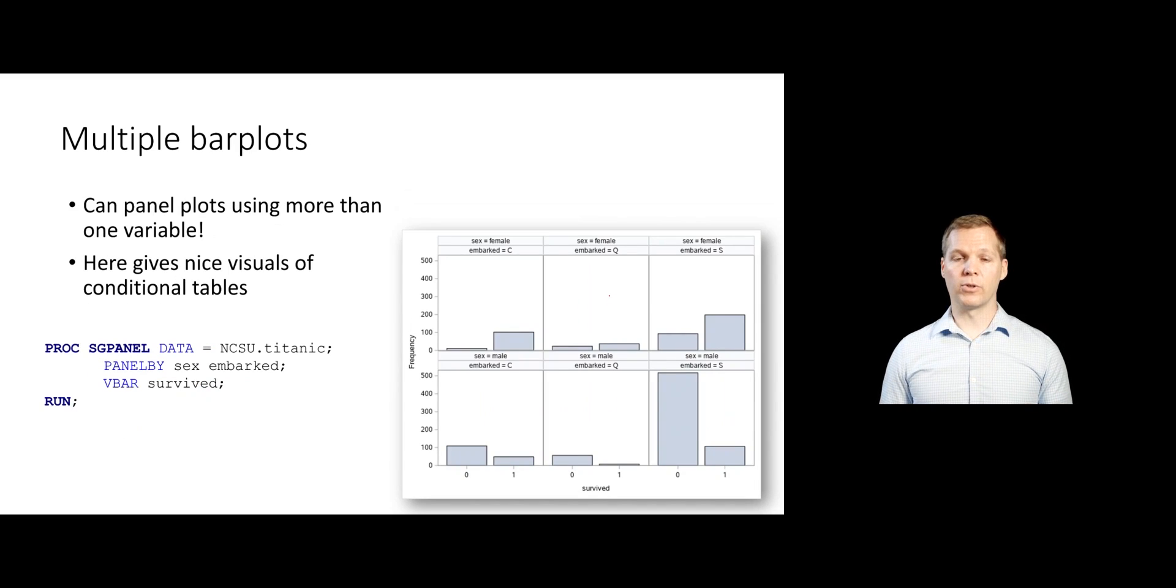And don't think you can only panel by one variable. You can just specify multiple variables in your panelby statement. So if I wanted one-way tables across these two variables visualized, I can do that by paneling by sex and embarked, and then doing VBAR and survived. So you can see the two conditions given here, and then I get a one-way table at that condition.